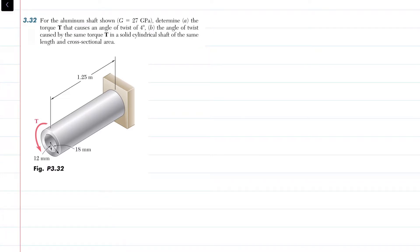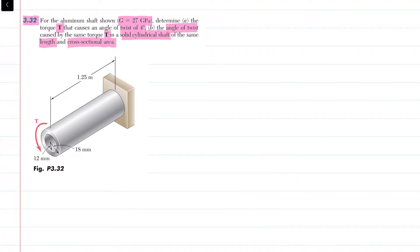Welcome back. Problem 3.2. For the aluminum shaft shown, G is equal to 27 GPa. Determine in part A the torque T that causes an angle of twist of 4 degrees, and in part B the angle of twist caused by the same torque T in a solid cylinder shaft of the same length and same cross-sectional area. This is a hollow shaft with internal radius 12 mm and outer radius 18 mm, and length 1.25 m.